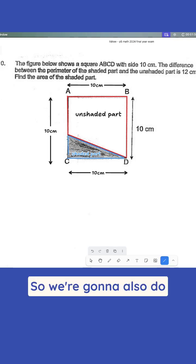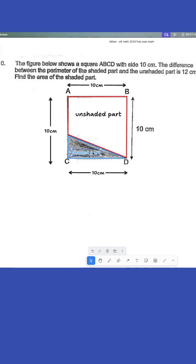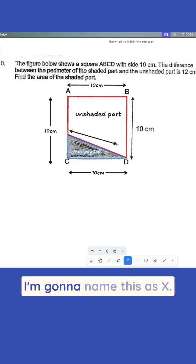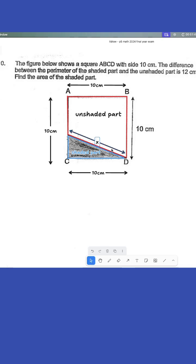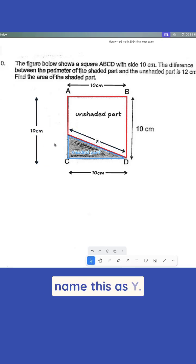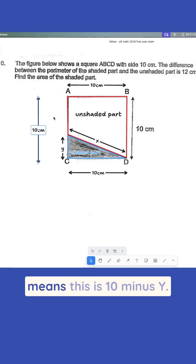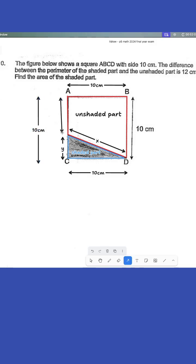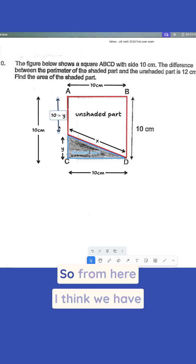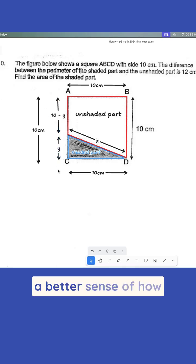So we're going to also do something like this where I'm going to name this. Wait, I'm going to have this arrow again. I'm going to name this as X. So this is X. And then I'm going to name this as Y. So this is Y. That's what I see over here. So if this is Y, then this means this is 10 minus Y in this case over here. So from here, I think we have a better sense of how this is being calculated.